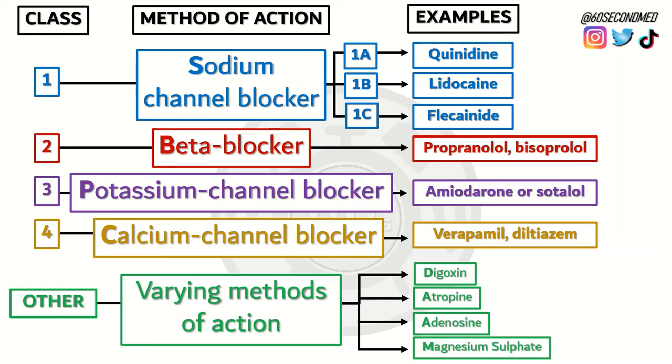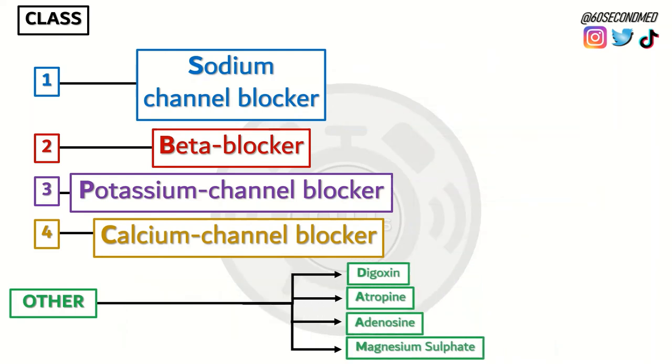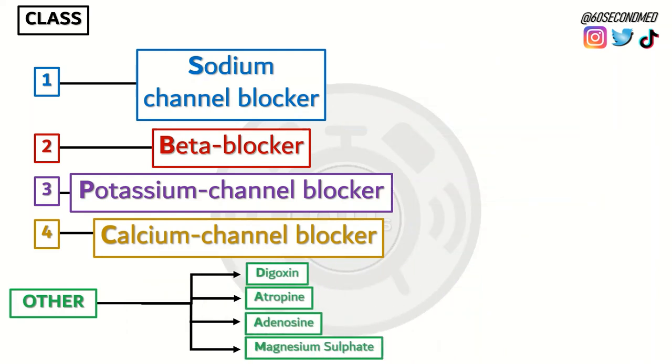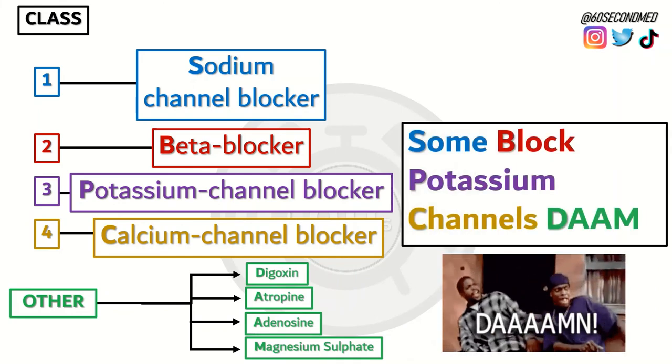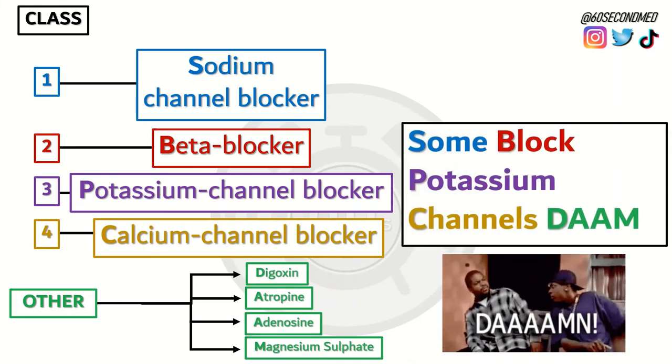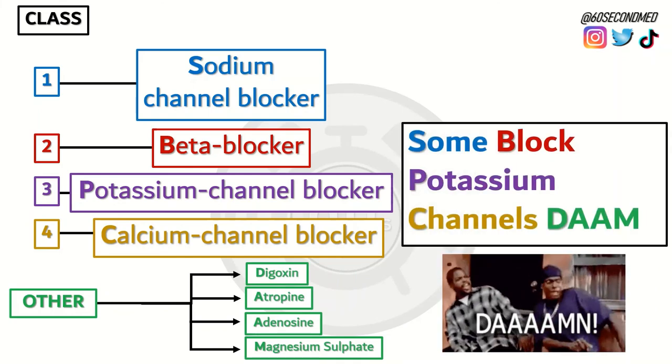A little mnemonic to remember all these different types of anti-arrhythmics by the Vaughan Williams classification is that some block potassium stream channels.